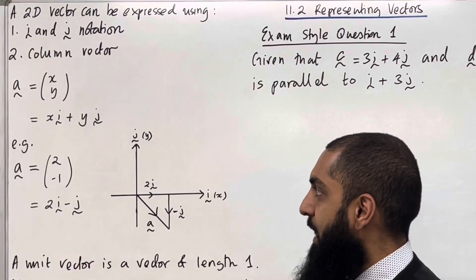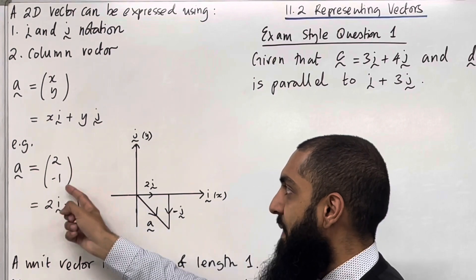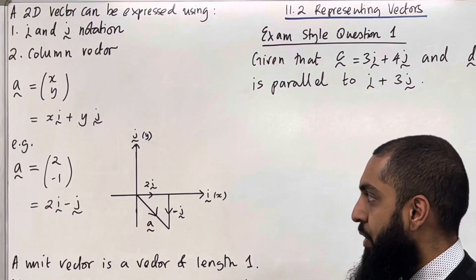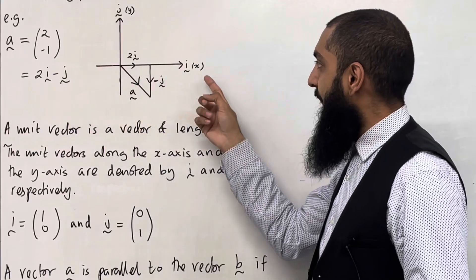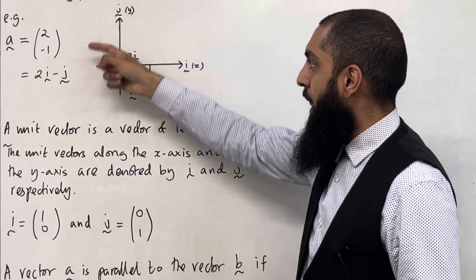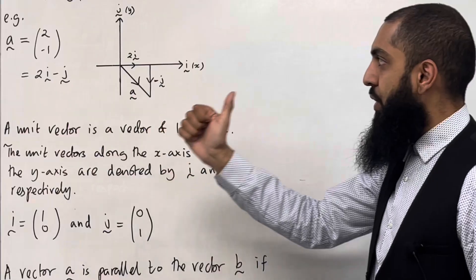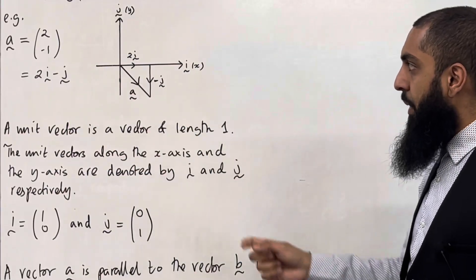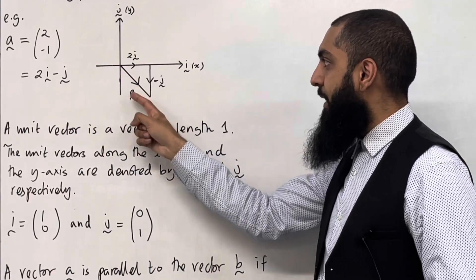For example, consider the vector a which is equal to (2, -1) as a column vector. In i j notation you can write it as 2i minus j. You can represent 2i minus j on a coordinate grid. The horizontal axis represents x, which represents i. The vertical axis represents y, which represents j. 2i indicates two units to the right, and minus j indicates one unit going down. So 2i minus j is your overall vector a.